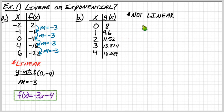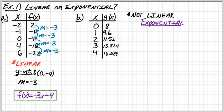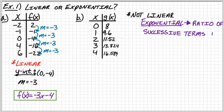Is it exponential, though? Just because it's not linear doesn't mean it has to be exponential — it could be neither. So how do you prove if something is exponential? Instead of going up or down by the same amount each time, for exponential you want to find the ratio of successive terms, and they should be constant. Ratio means like a fraction — divide.